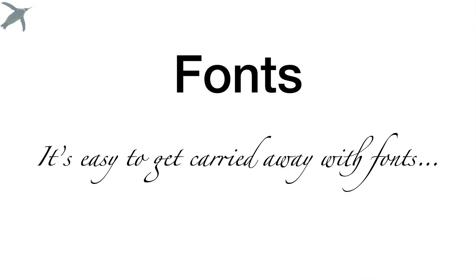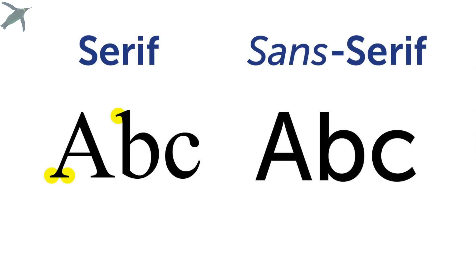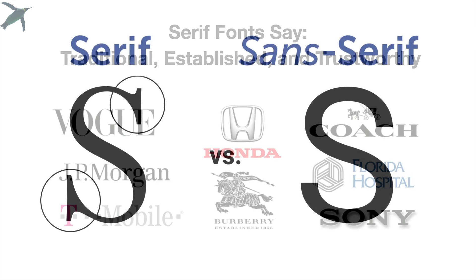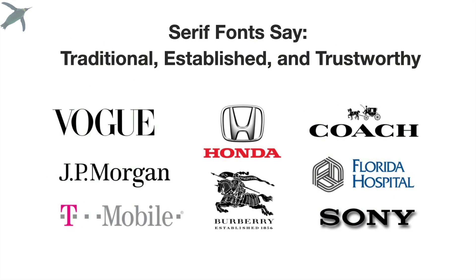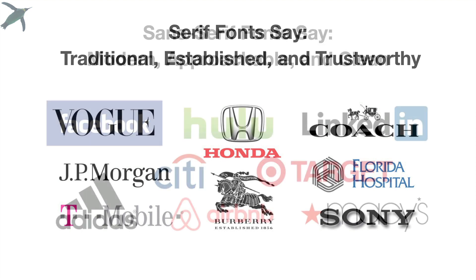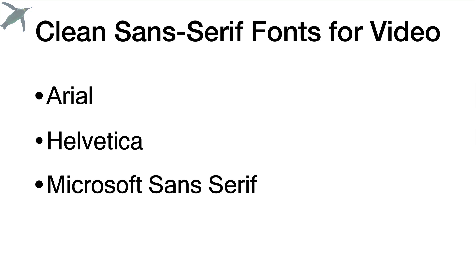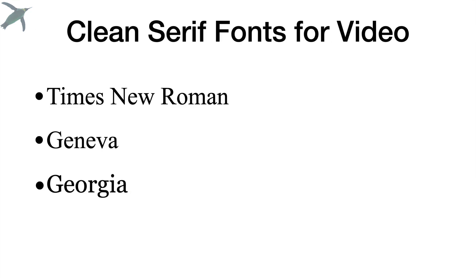Which brings us to fonts, and it is easy to get carried away here. The main distinction in fonts is serif or sans serif — either with or without those extra brush strokes. They look like little feet sometimes. This really gives fonts their character, so it's a very personal decision. More traditional fonts have those extra little brush strokes. Modern and especially digital fonts tend not to. Here are some clean sans serif fonts for video and some serif fonts.